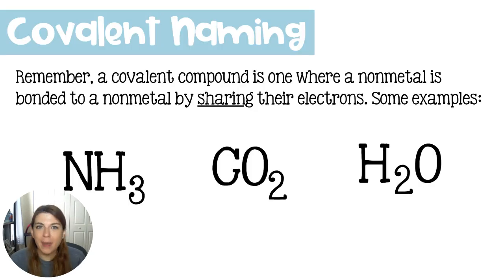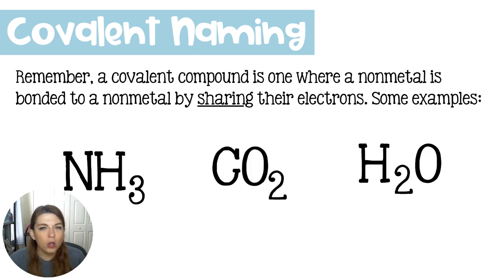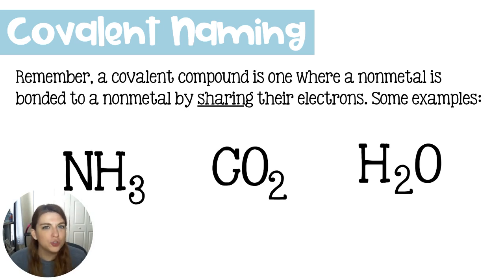Just a quick look back — any compound that has covalent bonds is going to be made of nonmetals that share their electrons. We have some examples: NH3 is called ammonia, CO2 you may know is carbon dioxide, and H2O you know is water.